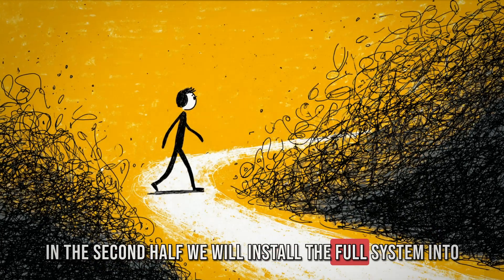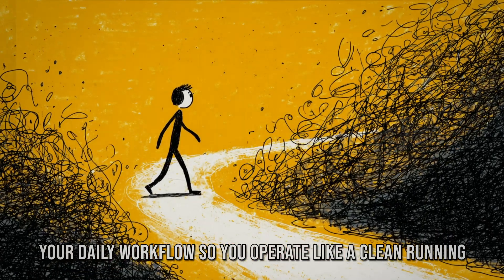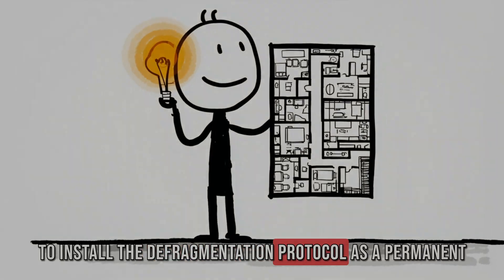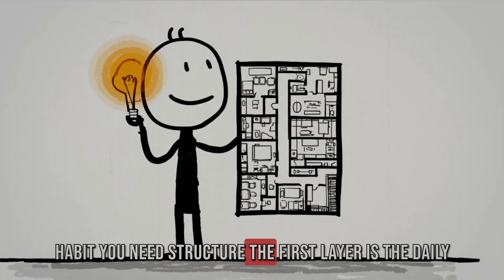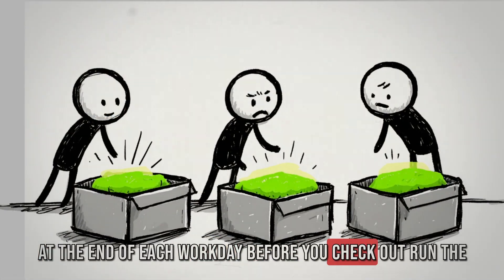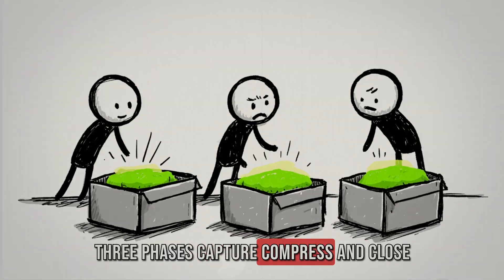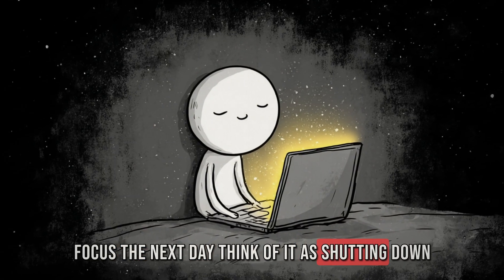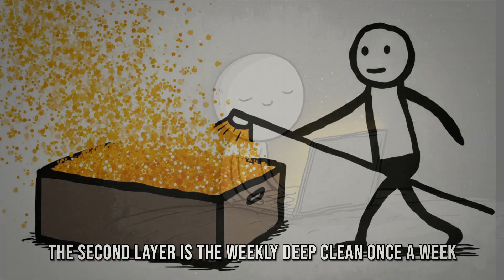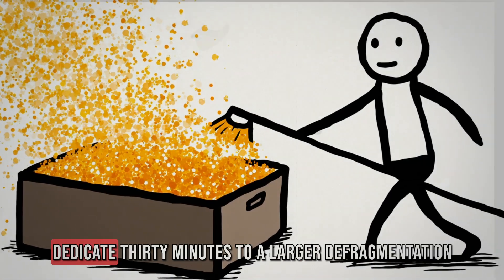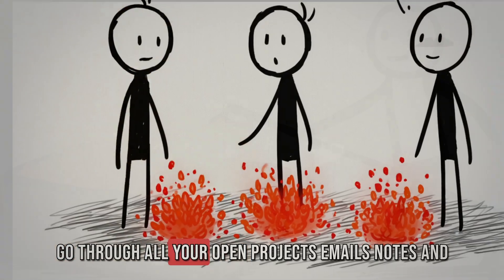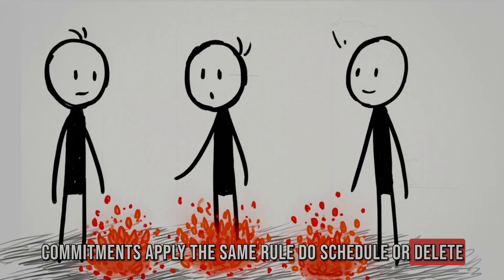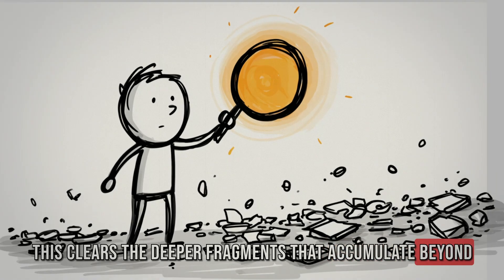To install the defragmentation protocol as a permanent habit, you need structure. The first layer is the daily reset. At the end of each workday before you check out, run the three phases. Capture, compress, and close. This takes 10 minutes, but it saves hours of wasted focus the next day. The second layer is the weekly deep clean. Once a week, dedicate 30 minutes to a larger defragmentation session. Go through all your open projects, emails, notes, and commitments. Apply the same rule. Do, schedule, or delete. This clears the deeper fragments that accumulate beyond the daily cycle. The third layer is the monthly overhaul. This is where you zoom out and ask, what loops am I keeping alive that no longer matter? Old goals, abandoned projects, relationships that drain energy. Delete them.